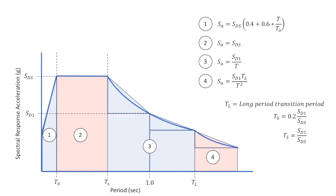What I'd like to do now is show that you can take ground motion data for a particular earthquake, use it to find the response of a single degree of freedom system over a range of periods, take those responses, and plot out a figure that looks quite similar to the design response spectrum — though more jagged, one should be able to draw a general representation of the response spectrum based off a given earthquake.